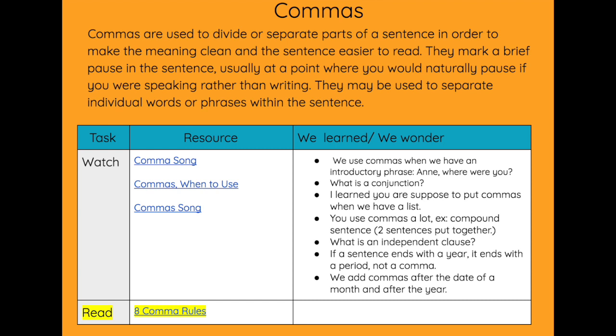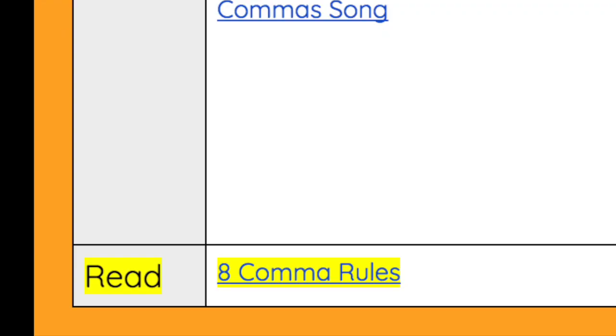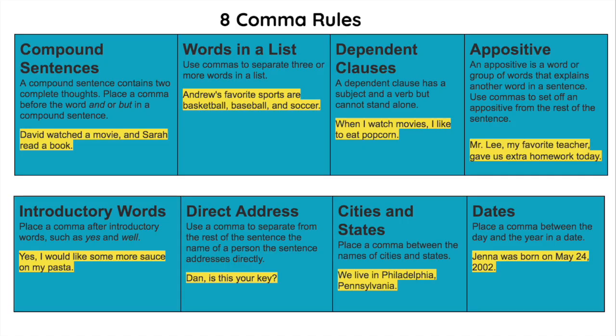Students are asked to explore the resource, then record their learnings and what they wonder about commas. After they have actively engaged with the learning and made meaning for themselves, the next step is the explain portion of the lesson design. Students will have access to the comma rules which cover the content goals for the lesson, plus rules that extend past third grade standards, allowing all types of learners to receive the level of support they need to succeed or go beyond.